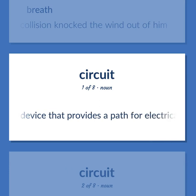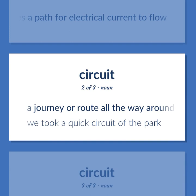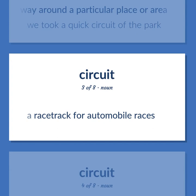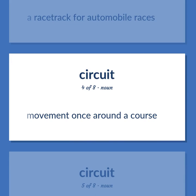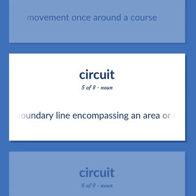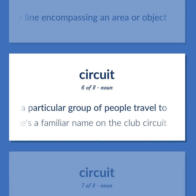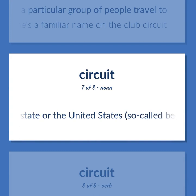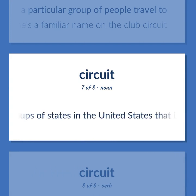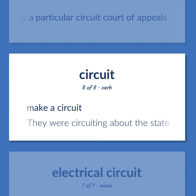CIRCUIT: An electrical device that provides a path for electrical current to flow. A journey or route all the way around a particular place or area — 'We took a quick circuit of the park.' A racetrack for automobile races. Movement once around a course. The boundary line encompassing an area or object. An established itinerary of venues or events that a particular group of people travel to — 'She's a familiar name on the club circuit.' Make a circuit — 'They were circuiting about the state.'